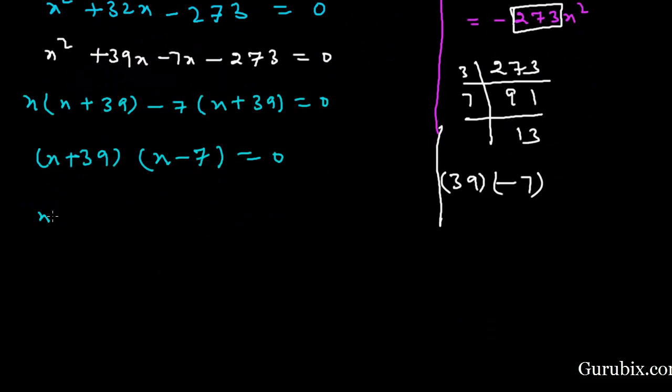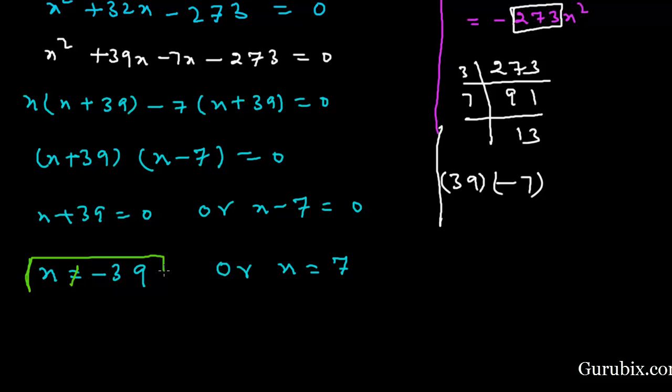Now we shall put X plus 39 equals 0, or X minus 7 equals 0. This means X equals minus 39 or X equals positive 7. X is not equals to minus 39 because age cannot be negative.